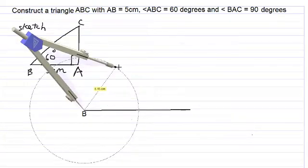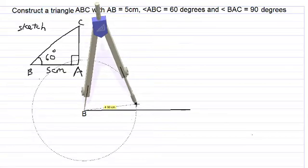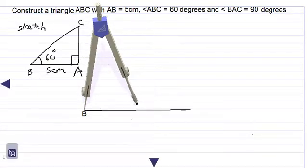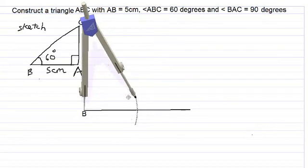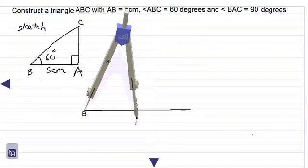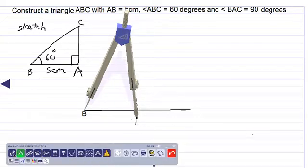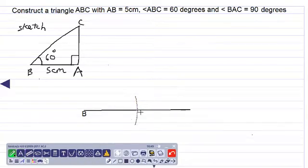...stretch out our compass to five centimeters, right, and using our lighter pencil we make a construction arc here as shown. We will call that point, point A. Okay, so let's call that point A.